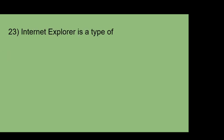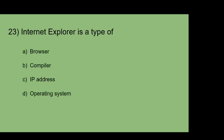Internet Explorer is a type of: A: Browser. B: Compiler. C: IP address. D: Operating system. The answer is browser.